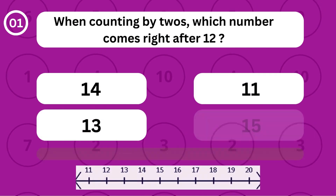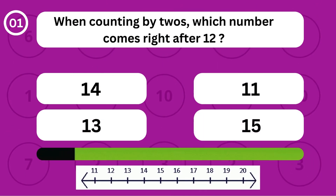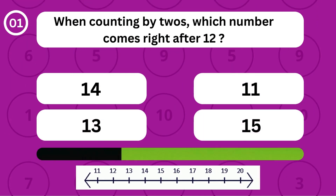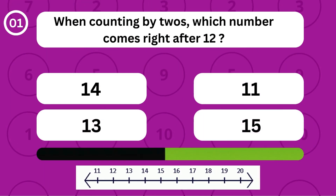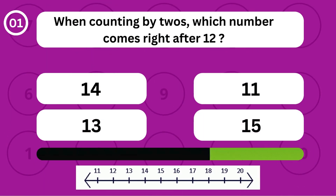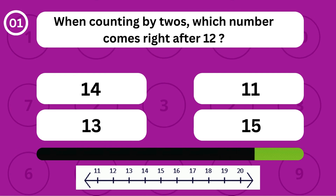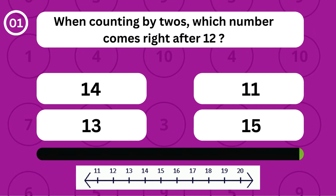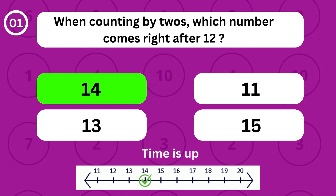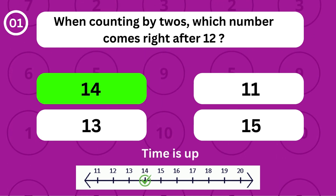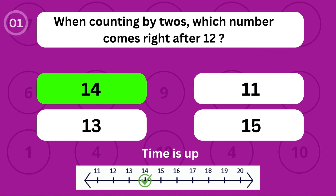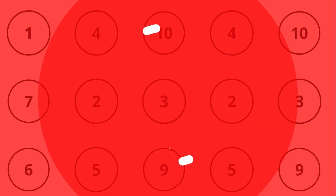When counting by twos, which number comes right after 12? When counting by twos, the number 14 comes right after 12.